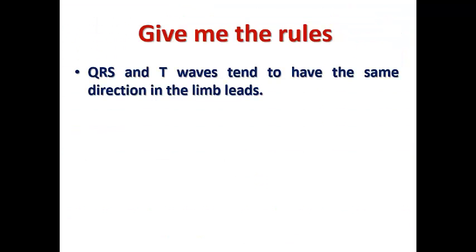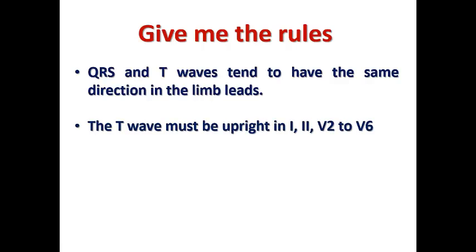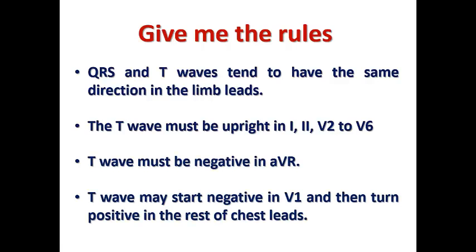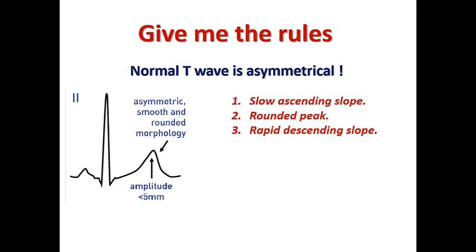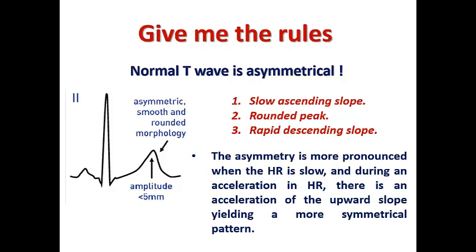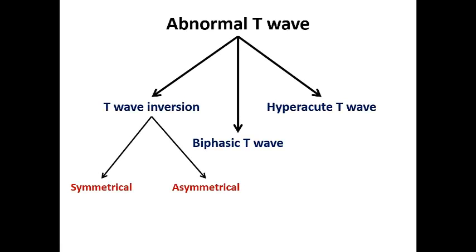The rules for the T-wave: QRS and T-wave tend to have the same direction in limb leads. T-wave must be upright in leads I, II, and V2 to V6. T-wave must be negative in AVR. T-wave may start negative in V1 then turn positive in the rest of the chest leads. Normal T-wave is asymmetrical with a slow ascending slope, rounded peak, and rapid descending slope. T-wave abnormalities include hyperacute, biphasic, and inverted — either symmetrical or asymmetrical.